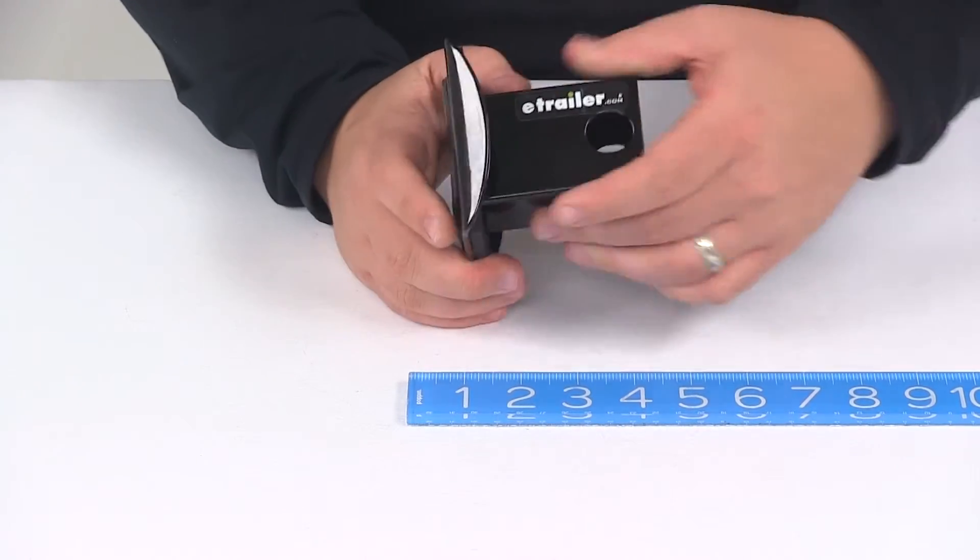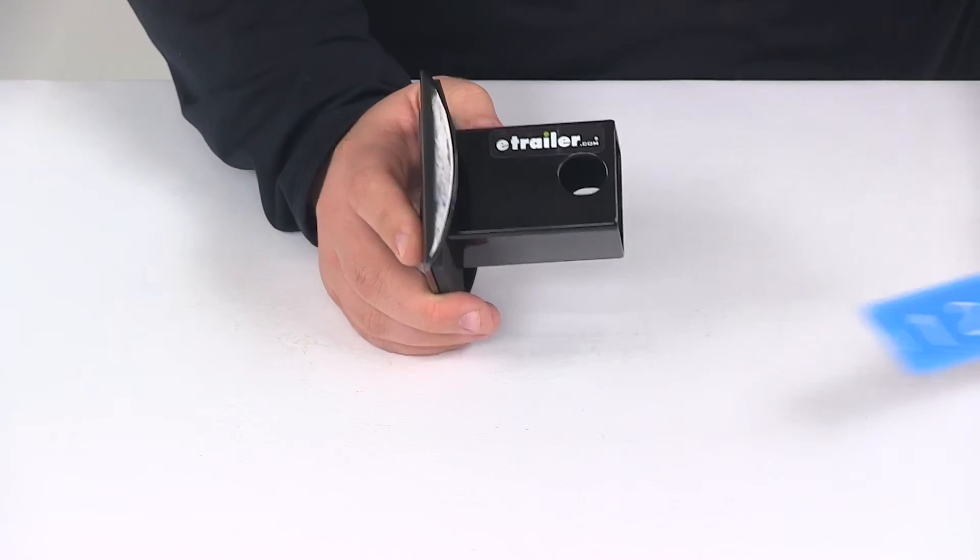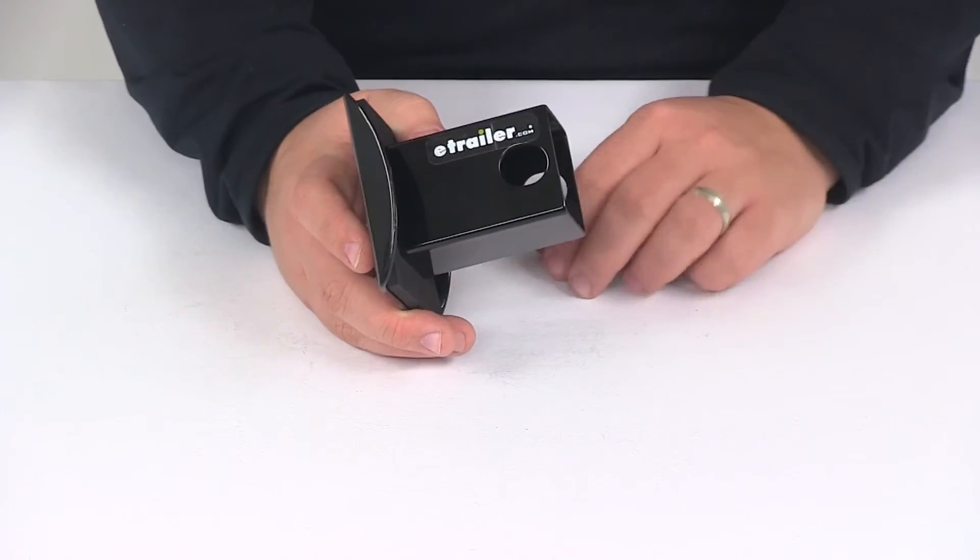The distance from the back of the foam pad to the center of the hitch pin hole is going to be pretty close to 2 1/2 inches. Now this is designed for a 2 inch by 2 inch hitch.